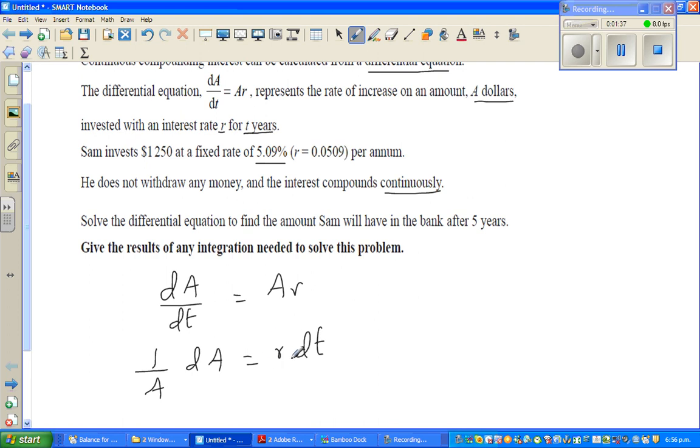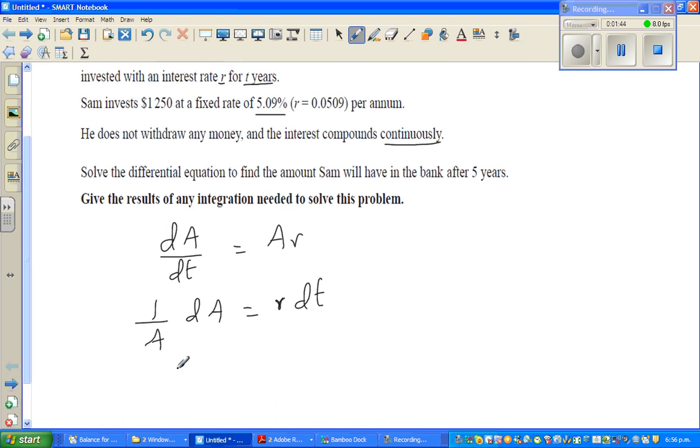Now r is a constant in any given situation—it's the rate of interest which is constant. I'm going to integrate both sides, so integration of (1/A)dA equals r times integration of dt. Since r is constant, I've taken it out.